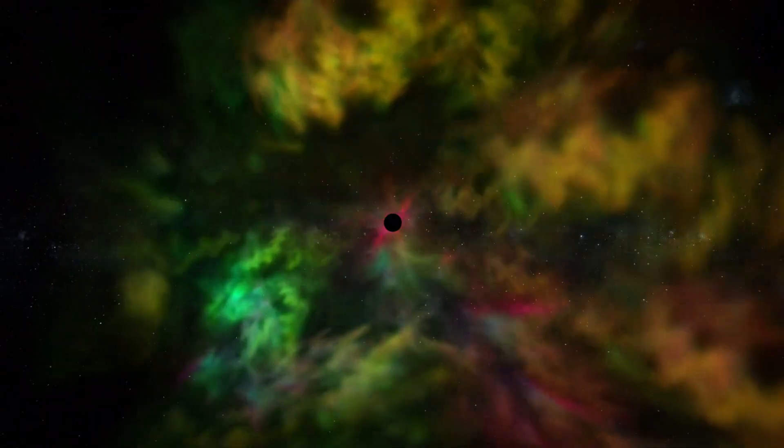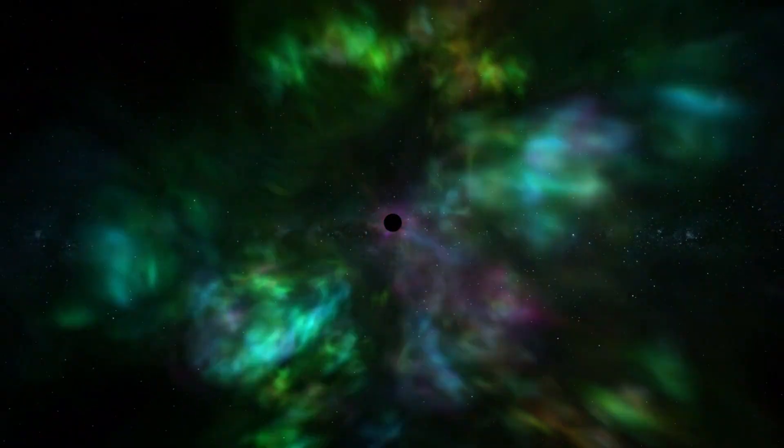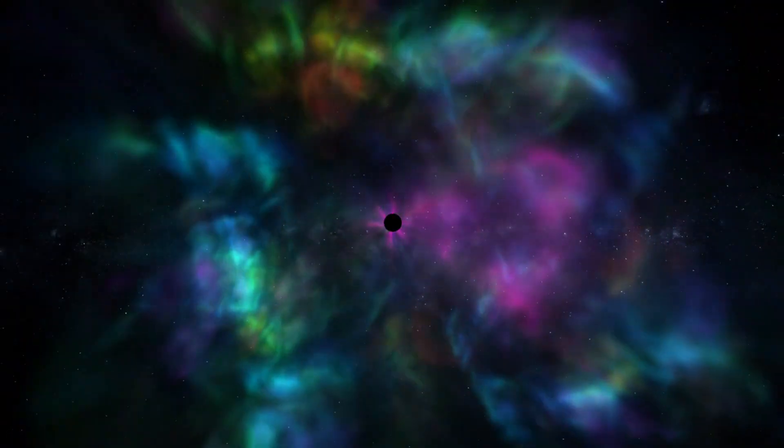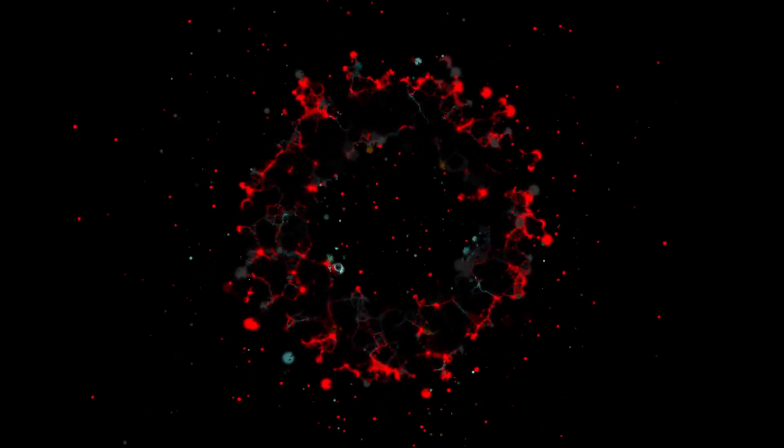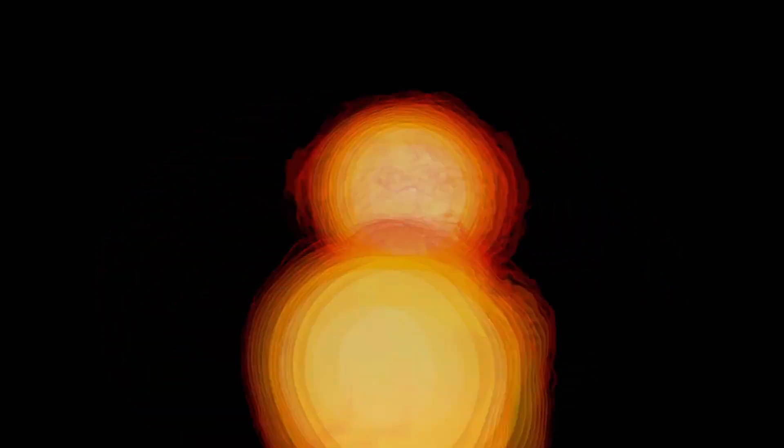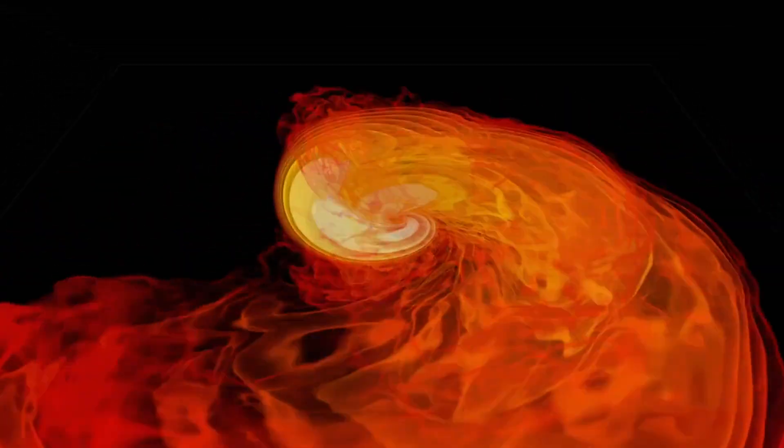Observing either a neutron star or a black hole from the remnants of Betelgeuse would be monumental for several reasons. The transition from a supernova to a neutron star or black hole provides a critical understanding of the final stages of stellar evolution. By studying these remnants, astronomers can refine models of how massive stars end their lives and contribute to the cosmic life cycle of matter. Neutron stars and black holes represent some of the most extreme conditions in the universe. Observing these objects can provide insights into fundamental physics, such as the behavior of matter under intense gravity and the nature of space-time itself. For instance, studying neutron stars helps scientists understand the properties of nuclear matter and the effects of extreme magnetic fields, while black holes test the limits of general relativity and quantum mechanics.